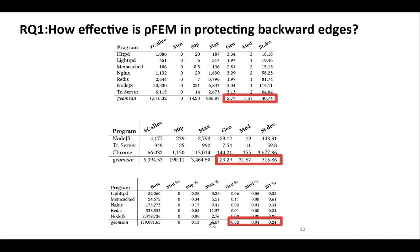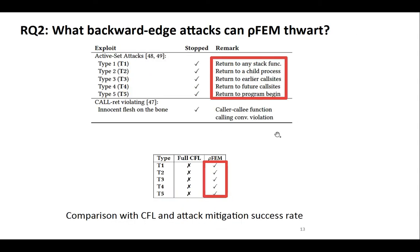For these programs we counted the number of instructions which can be used to craft an attack. We can see that in geomean, per thousand, we have 0.02 instructions which can be used for performing an attack, showing very good results. We also created some attacks — five types drawn from literature — and we could mitigate with our tool: stack function calls, calls to child processes, early call sites, function call sites, and calls to program begin. Comparing with the earlier tool FullCFL, our tool can mitigate all these attacks whereas FullCFL cannot.